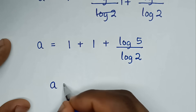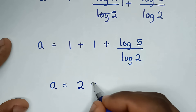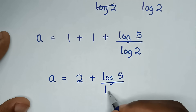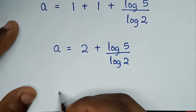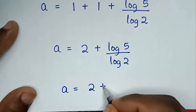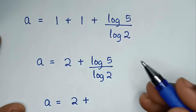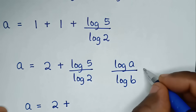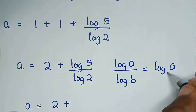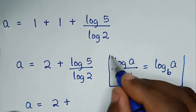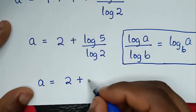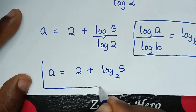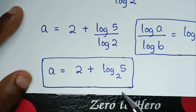Then it will be a is equal to 1 plus 1 which is 2, plus log of 5 over log of 2. This part here is in the form of log of a over log of b, which is equal to log of a base b. So from this rule we will apply this form, and it will be log of 5 base 2. So this is the final answer for the value of a.